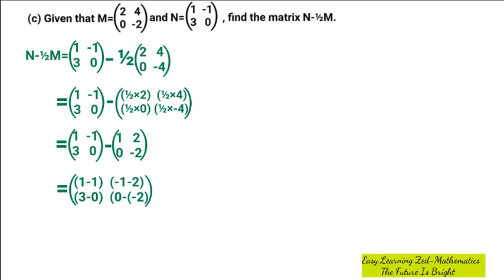Now I'm going to evaluate those. Equal to: 1 minus 1 gives us 0. Negative 1 minus 2 gives us negative 3. 3 minus 0 gives us 3. 0 minus negative 2 — the two negatives form a positive — so it's 0 plus 2, which gives us 2. That is the final matrix. That is the answer examiners expected from you learners. Now we can go to the next question.